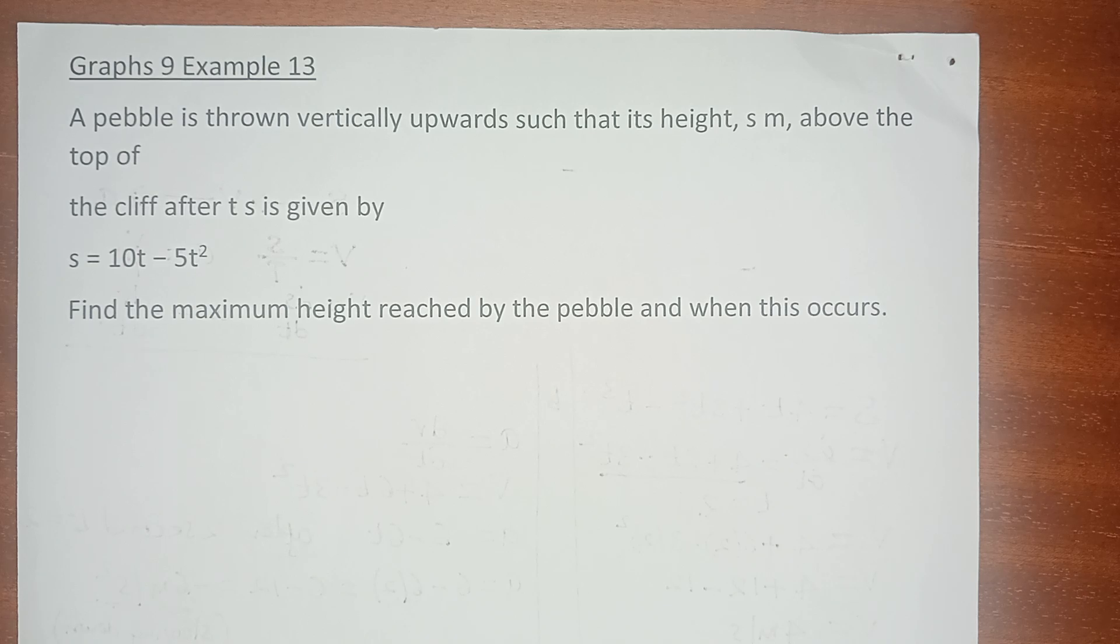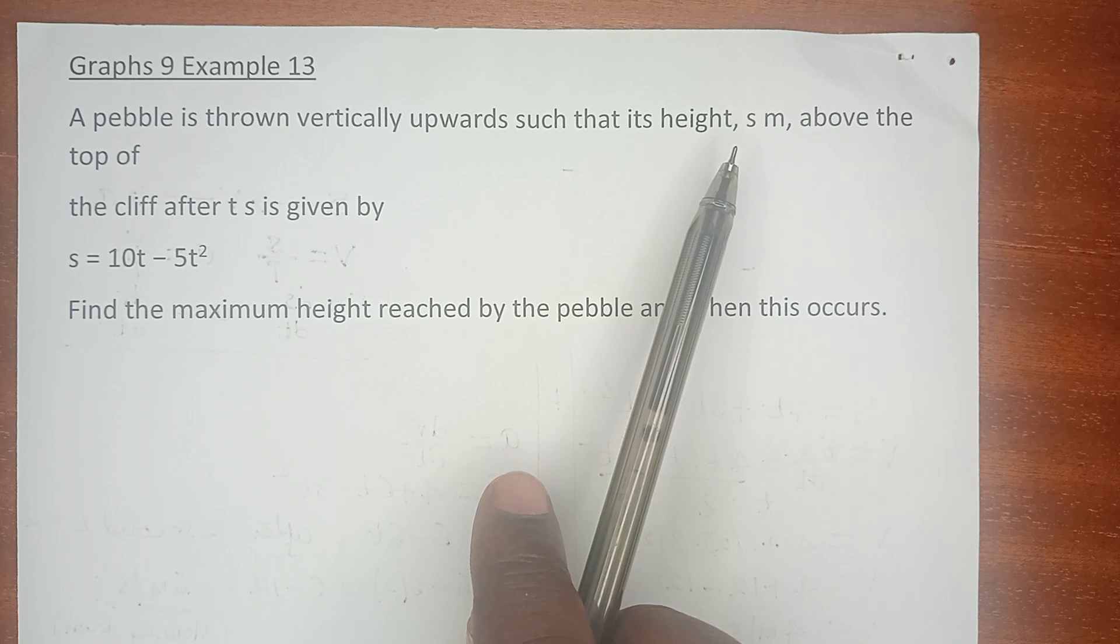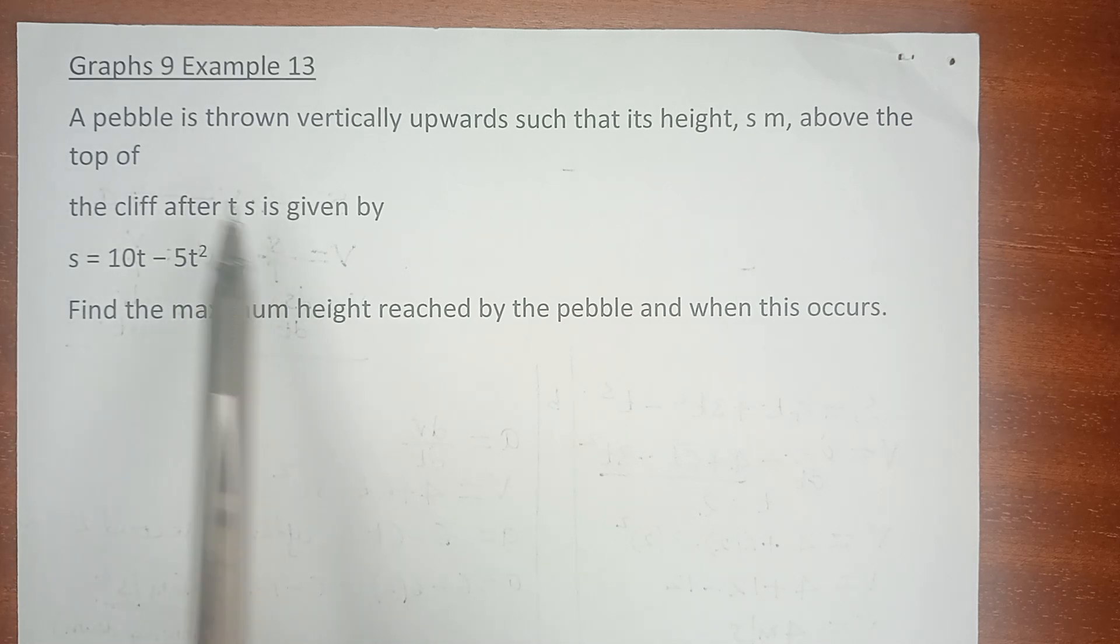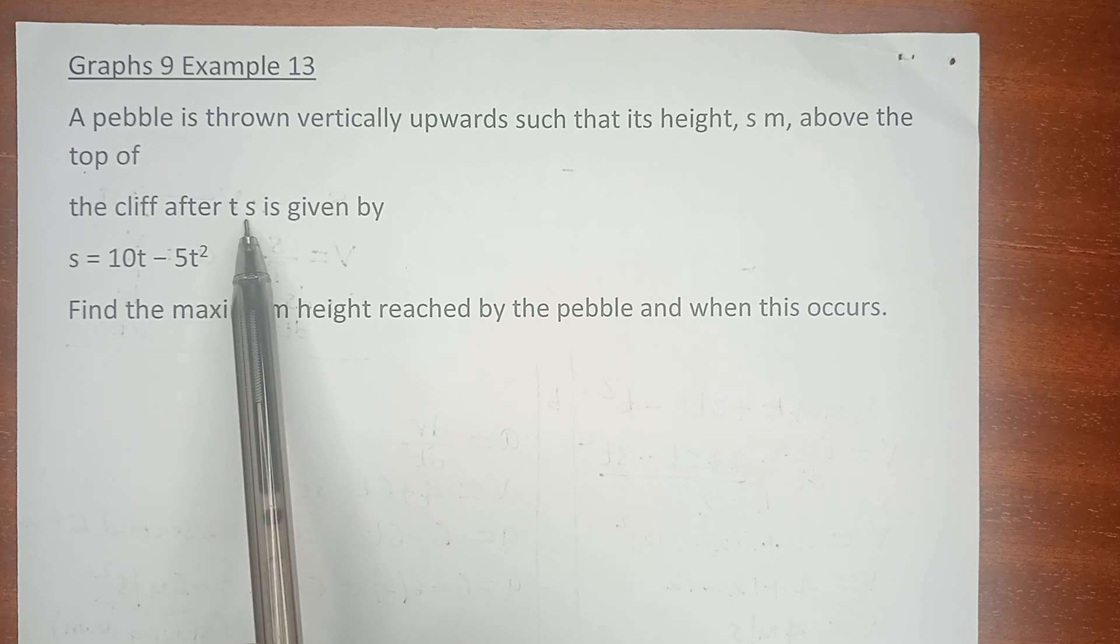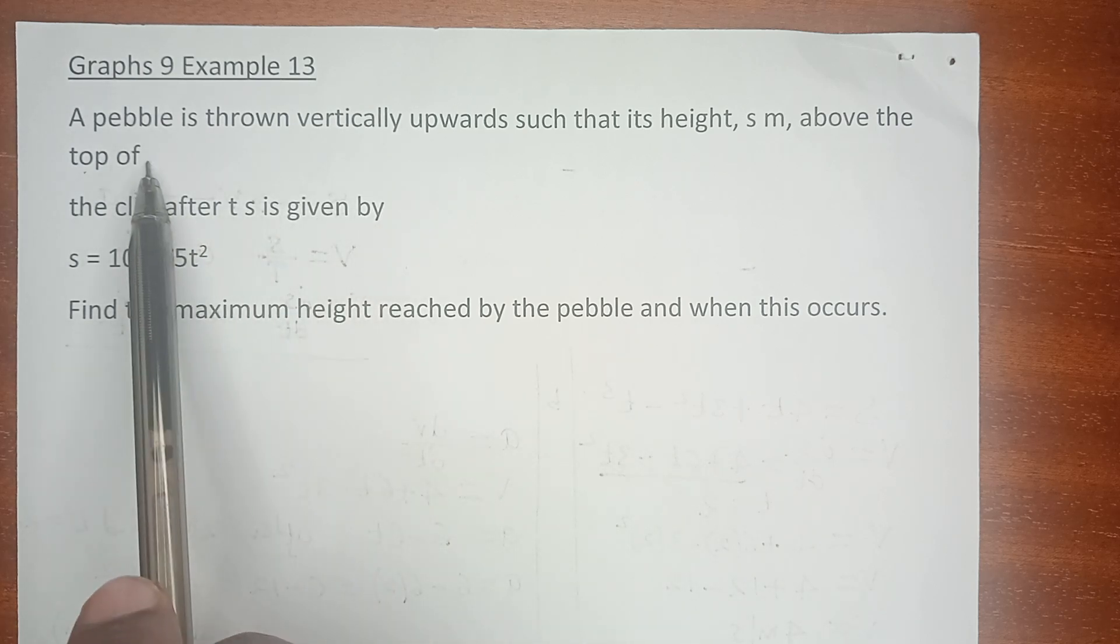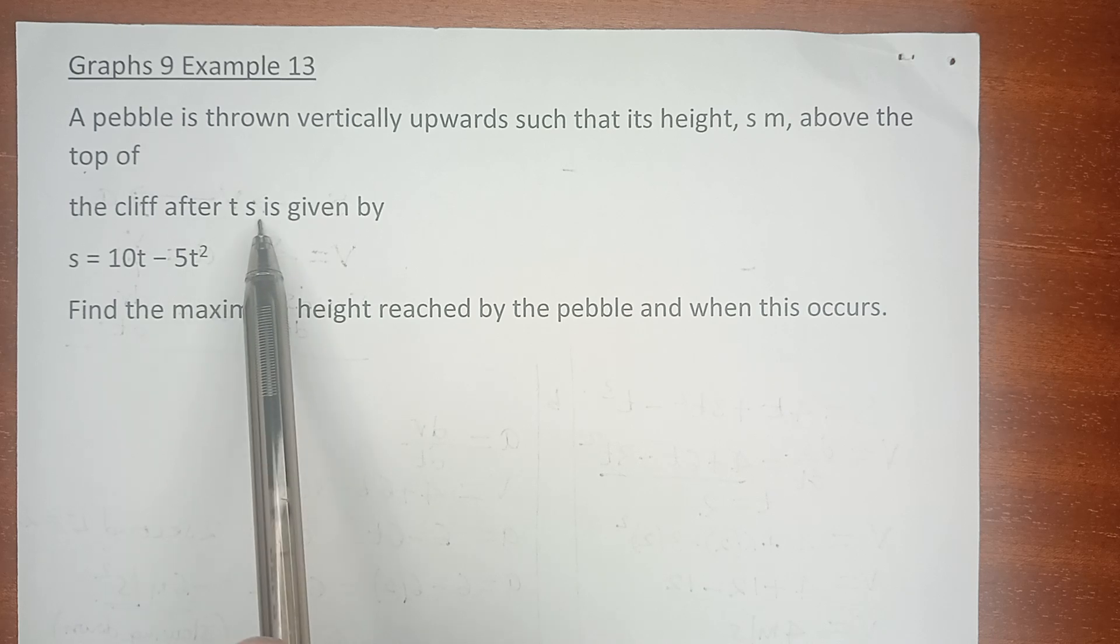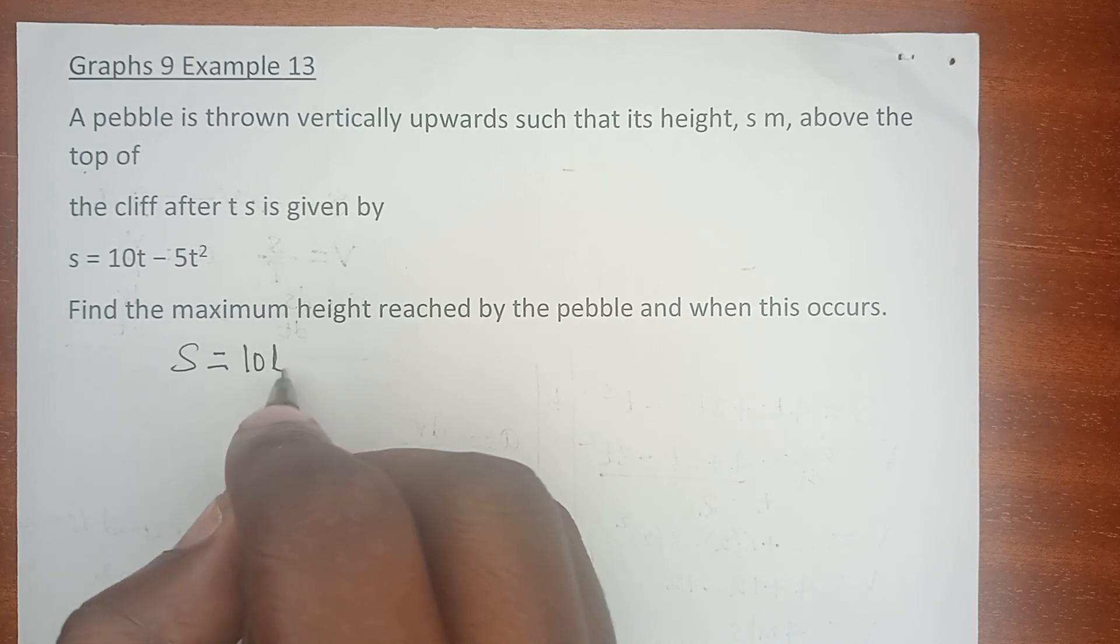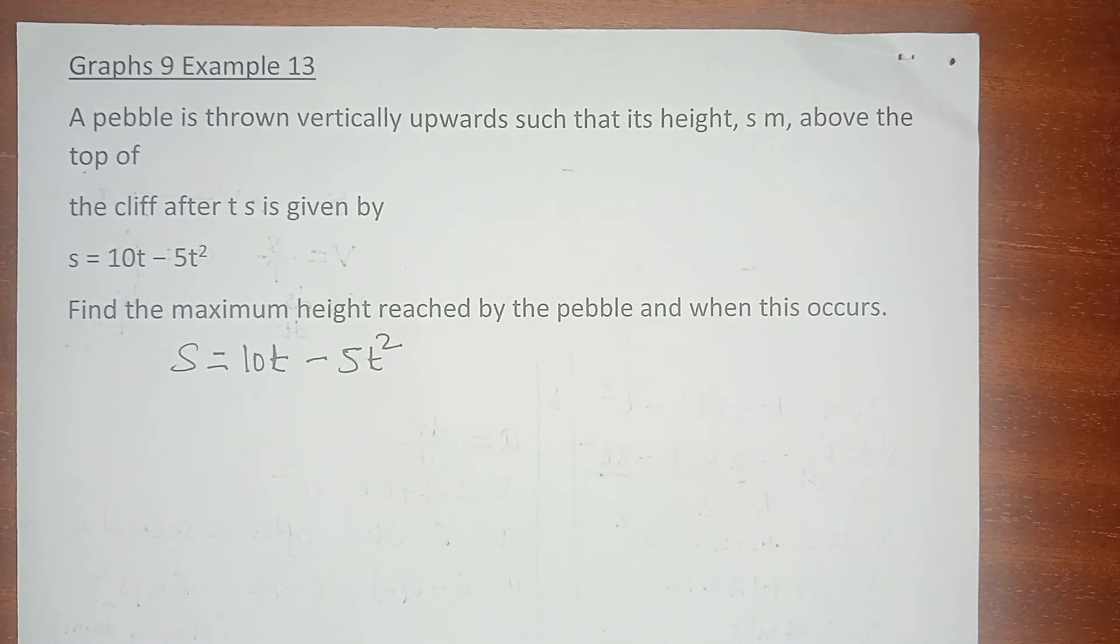We are now looking at Example 13 which says that a pebble is thrown vertically upwards such that its height s meters above the top of the cliff after t seconds is given by s = 10t - 5t².